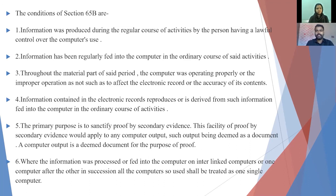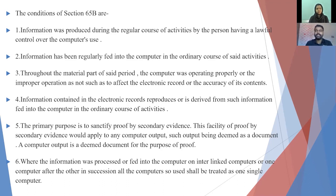There are certain clauses in Section 65B. Clause 2 deals with the conditions. We cannot take digital evidence as it is — there are certain criteria. First, the information was produced during the regular course of activities by the person having lawful control over the computer. For example, on the particular day of the commission of the crime, the person must have used their mobile phone or desktop. It is clearly stated that this computer or any electronic device must be in regular use.